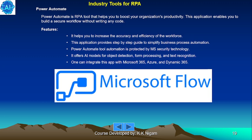Power Automate is an RPA tool that helps boost organizational productivity by enabling you to build secure workflows without writing any code. Features include increased accuracy and efficiency of workflows, step-by-step guides to simplify business process automation, protection by Microsoft security technology, AI modules for object detection, form processing, and text recognition, and integration with Microsoft 365, Azure, and Dynamics 365.